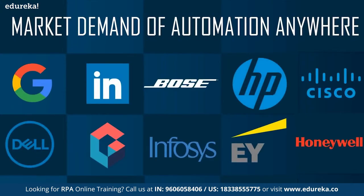Multinational companies such as Google, LinkedIn, Cisco, Dell, Genpact, Honeywell, IBM, HP, Infosys, and many others use Automation Anywhere in their day-to-day tasks to automate simple to complex tasks. Not everybody has in-depth knowledge of Automation Anywhere. If you want to scale your career as an RPA developer, you need to understand different tools used in the RPA industry, such as UiPath, Blue Prism, and Automation Anywhere.